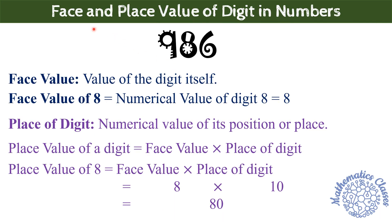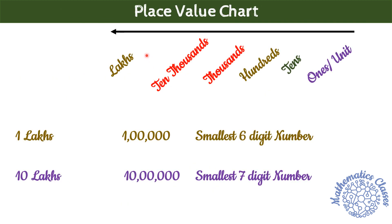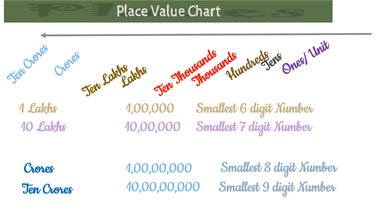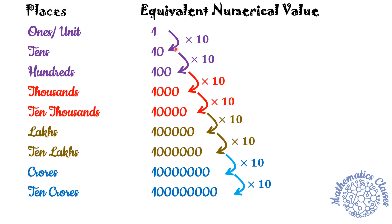हमने already Face and Place Value के lecture में सीखा है कि कैसे numbers digits से बनते हैं, और हर digit की value depends करती है उसकी place value पर। We can prepare one chart for place value — starting from 1s, 10s, 100s, 1000s, 10,000s, then we get Lakhs. Lakhs is the smallest 6-digit number and 10 Lakhs is the 7-digit number. Similarly, Crore is the smallest 8-digit number and 10 Crore is the smallest 9-digit number। हर next place value अपनी previous place value की 10 times होती है।